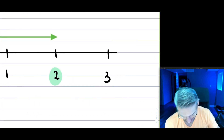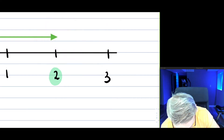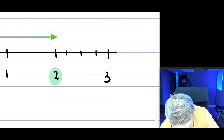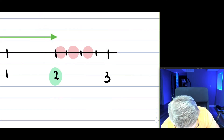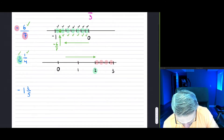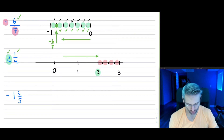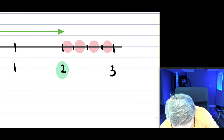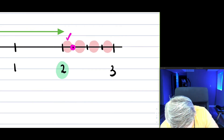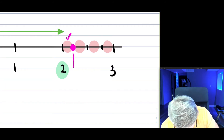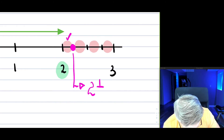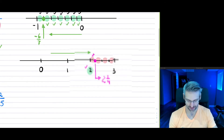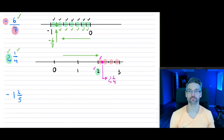Between 2 and 3, I break the space into 4 pieces — 1, 2, 3, and 4 — because it's a quarter. A quarter means I take only one of those pieces. So right here is 2 and 1 quarter: it has passed 2 and is only one out of those 4 pieces. That's how you graph that particular mixed number.